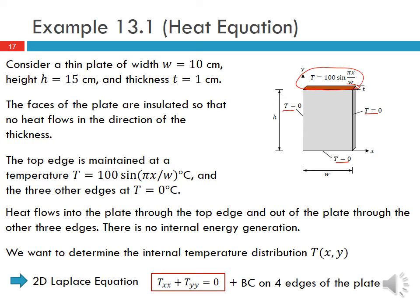Heat flows into the plate through the top edge and out through the other three edges, with no internal energy generation. We want to determine the internal temperature distribution T(x,y). This is the 2D Laplace equation where the temperature is governed by T_{xx} + T_{yy} = 0, since there is no internal energy generation. The solution is governed by this equation along with the boundary conditions: three sides held at 0, and the top at 100 sin(pi*x/W).